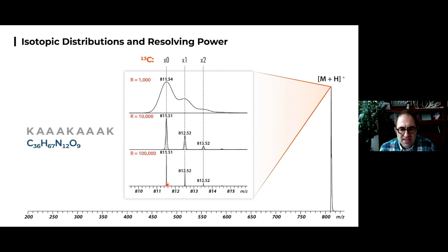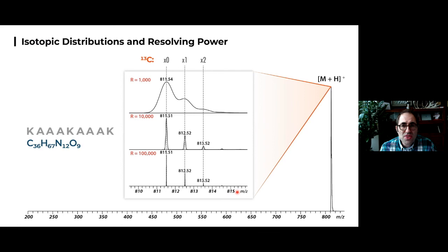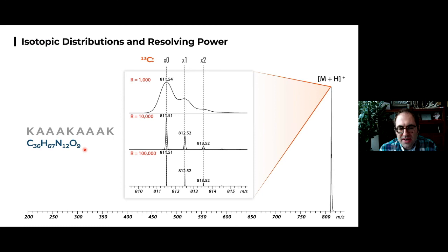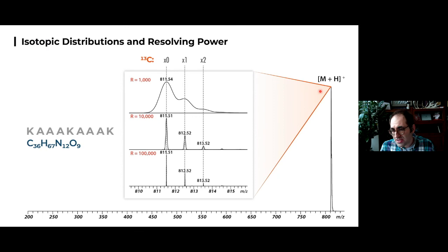Turning up resolving power to 10,000 makes it much easier to distinguish these peaks, and at 100,000 they get very narrow with excellent separation. We can determine charge by looking at isotope spacing: the spacing between the monoisotopic peak and the C-13 peak is about 1 m/z unit. If I know the mass difference is 1 Dalton for the C-13 peak, and the spacing is 1 m/z, then charge must equal 1. So the mass of this thing would be 811.5 minus the proton, giving 810.5.